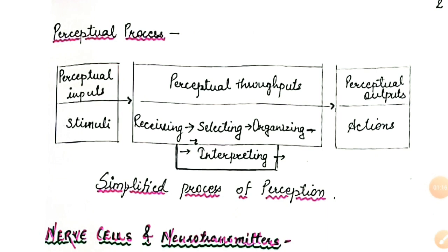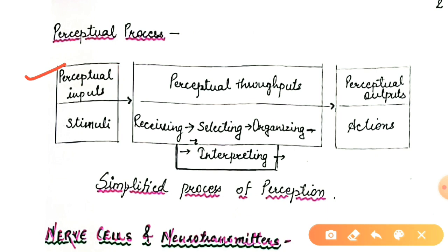Here is a flowchart depicting the simplified process of perception. In the first column there are perceptual inputs, then perceptual throughputs, then perceptual outputs. Perceptual inputs means stimuli provided to an organism. Then the organism receives, selects, organizes, and interprets the stimuli. After that, the organism gives a reaction or reacts to the stimuli. This is the simplest process of perception shown in the flowchart.